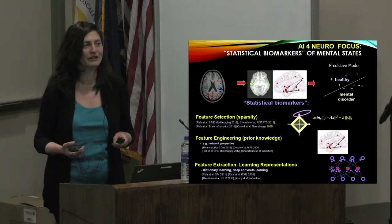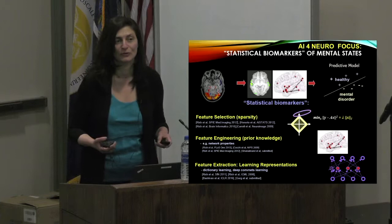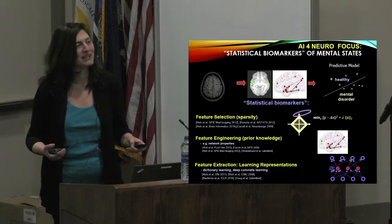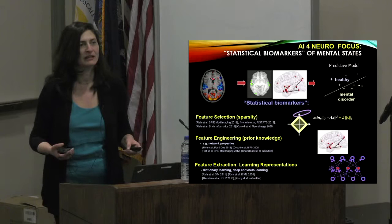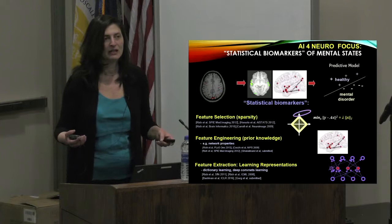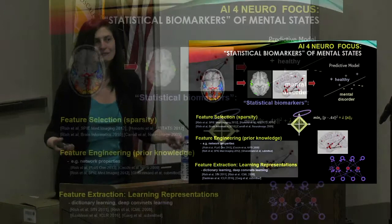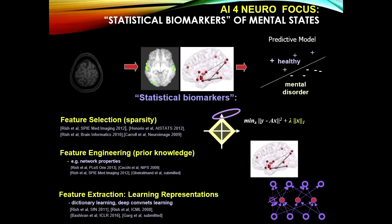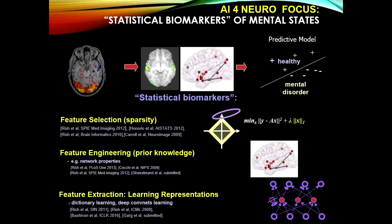Let me start with the older, more established direction of applying AI to neuroscience and related fields. When people bring AI to the neuroimaging domain, they look for statistical biomarkers in the data — extracting or discovering features predictive of particular disorders like schizophrenia, or identifying what in the brain is responsible for pain sensation, or what differentiates functional networks of cocaine addicts from controls.